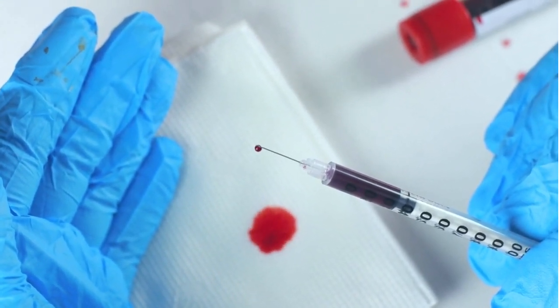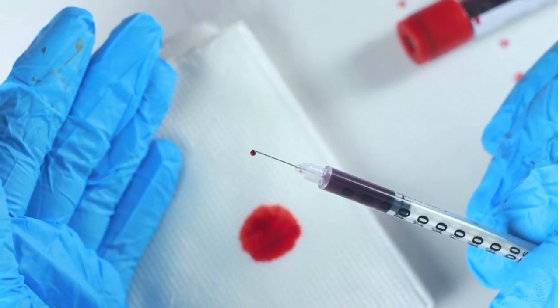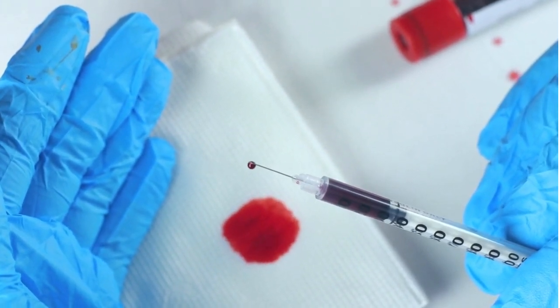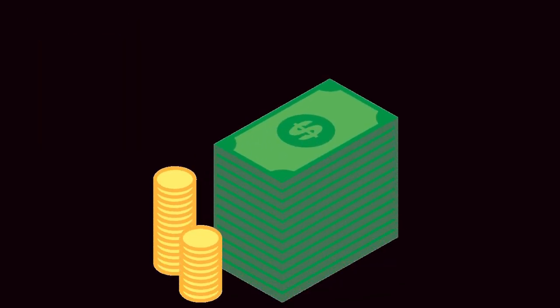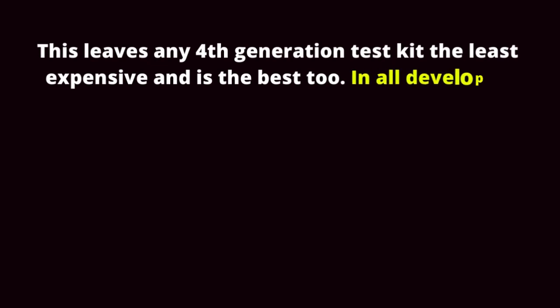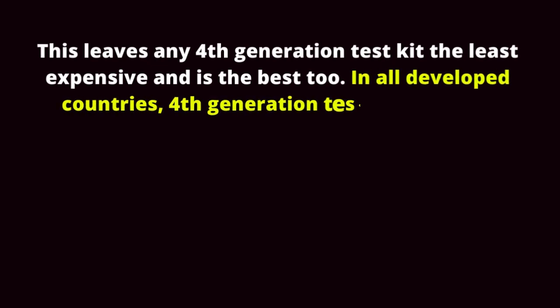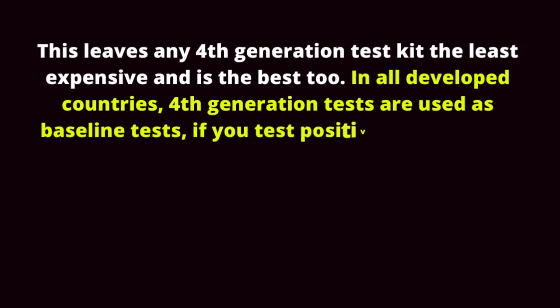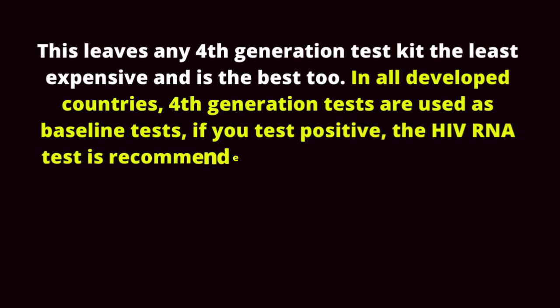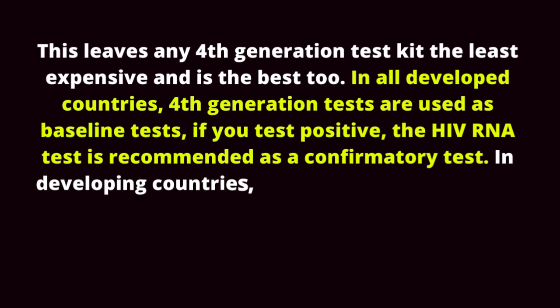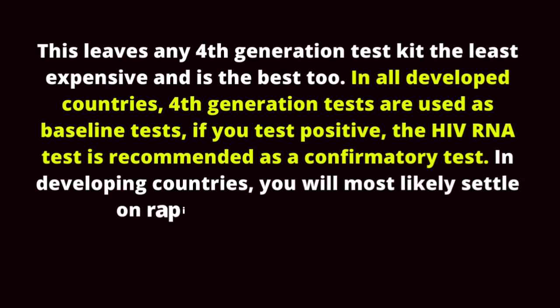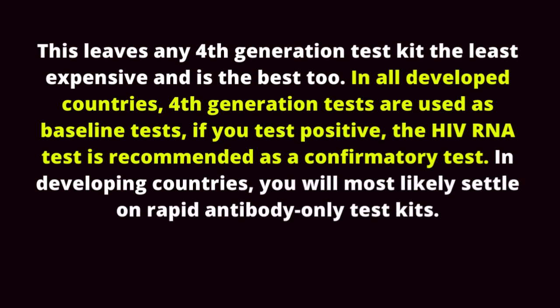Question: What is the best HIV test? The best test kit is the one with the shortest window period. HIV RNA should be the best because it gives the highest accuracy from 33 days, but the problem is that this test kit is very expensive and not available in many testing centers. This makes the fourth generation test kit the least expensive and best option. In all developed countries, fourth generation tests are used as baseline tests; if you test positive, the HIV RNA test is recommended as a confirmatory test. In developing countries, you will most likely settle on rapid antibody-only test kits.